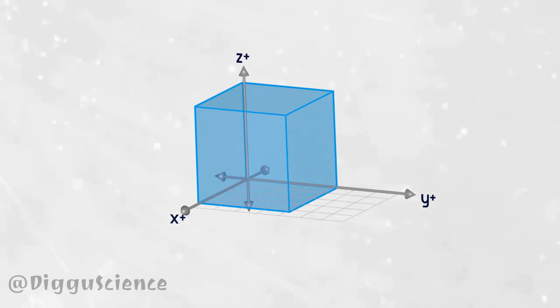The jelly box has six surfaces. Each surface has a different normal direction. Let's start from the surface that has a normal direction towards the positive z-axis. This surface can experience normal stress, sigma-z-z.